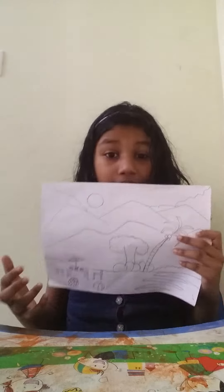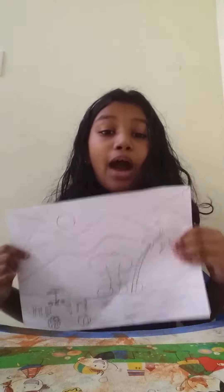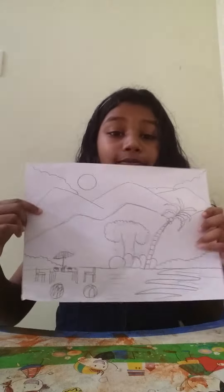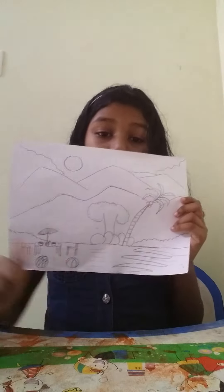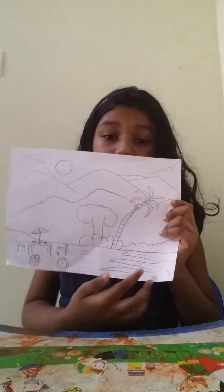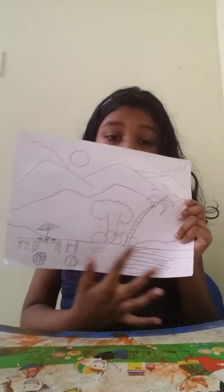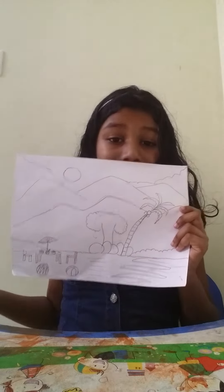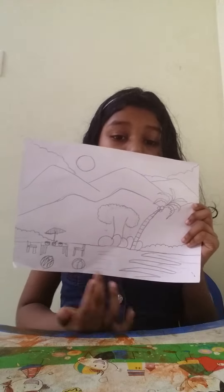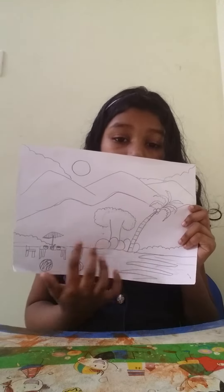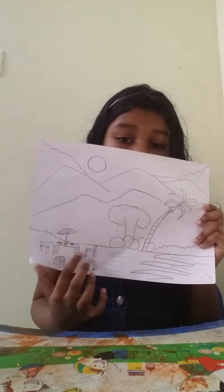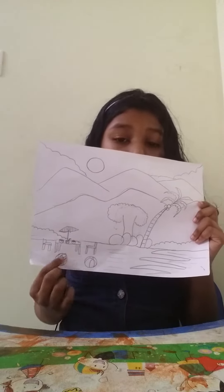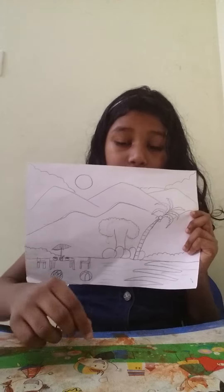First, take a picture of a beach. I am not going to draw this again, but I will show how I draw it. First, we will draw a big giant line and the water.